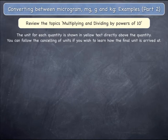In the following examples, the unit for each quantity is shown in yellow text directly above the quantity. This will show you how the units cancel.